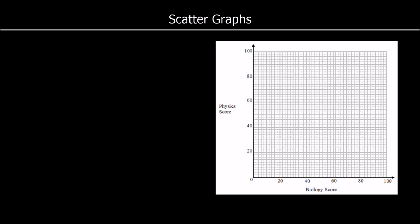In a scatter graph, each piece of data, each piece of information, is marked with a cross. Here we've got a scatter graph that has biology scores and physics scores. So each cross on this scatter graph will be one student. So if a student scored 40 in biology and 60 in physics, a cross would go at 40-60 to represent that student. If another student scored 60 in biology and 50 in physics, a cross would go at 60-50 to represent that student.